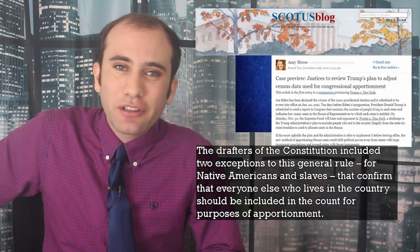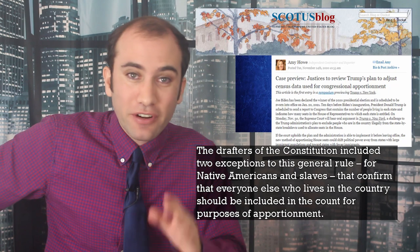The drafts of the Constitution included two exceptions to this general rule, for Native Americans and slaves. Extrapolating on that, it's not a huge step to infer that they would want everyone else who lives in the country to be included in the count for the purposes of apportionment. If you have a permanent residence and you're not a slave or Native American, the founders wanted you represented. America finally updated these laws during the Civil War. Based on historical interpretation, progressives argue that the founders would have wanted undocumented permanent residents to be included in apportionment.